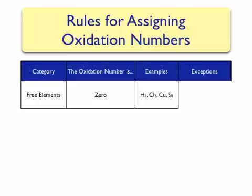Free metals, such as copper or sodium, would have an oxidation number of zero. Some elements form molecules in their elemental form — for example, hydrogen and chlorine form diatomic molecules. All of the oxidation numbers for the atoms in those molecules equal zero, since they are free elements. Sulfur forms an eight-membered ring of sulfur atoms; none of these atoms will have an oxidation number other than zero. There are no exceptions to this rule.